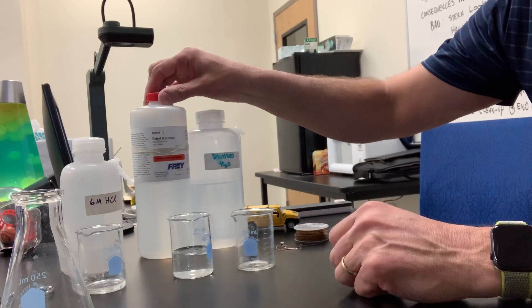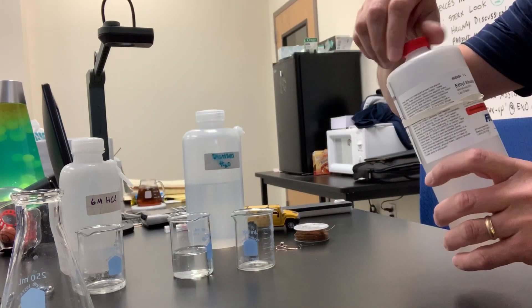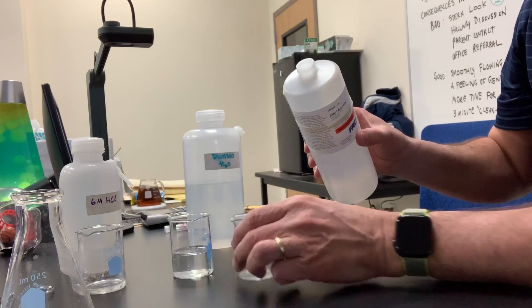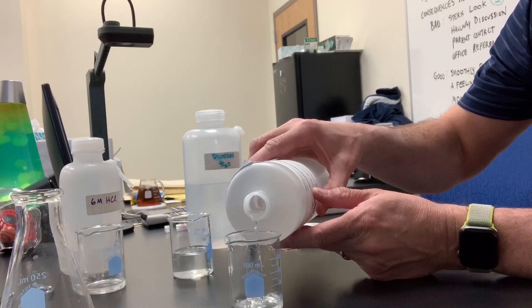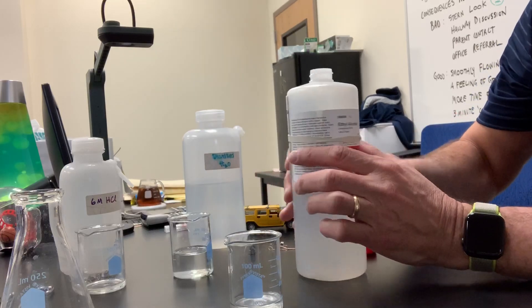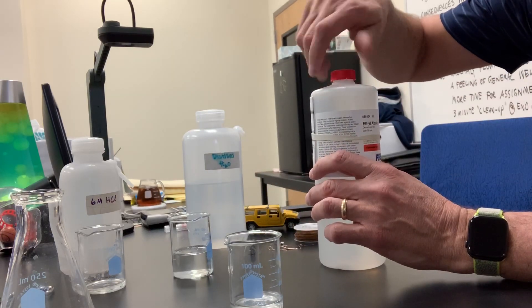So here's a bottle of ethyl alcohol, also known as ethanol. Let me open it up in this beaker here, and you'll notice it's a liquid at room temperature. Look at that, it's a liquid at room temperature, and its color.